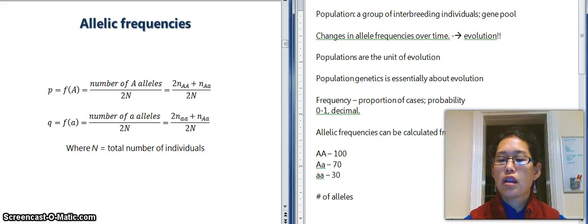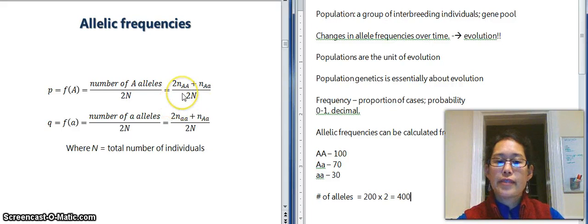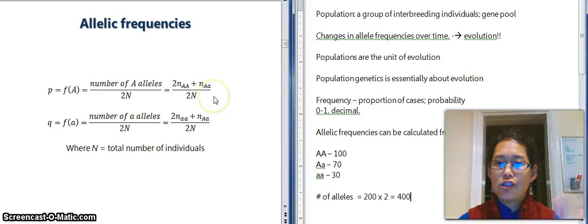All right so the total number of alleles in this population equals 200 individuals times two equals 400. Okay so that's going to be our number 400. We're going to have 100 individuals times two because they each have two big A's and we'll have 70 individuals just times one because they each only have one.